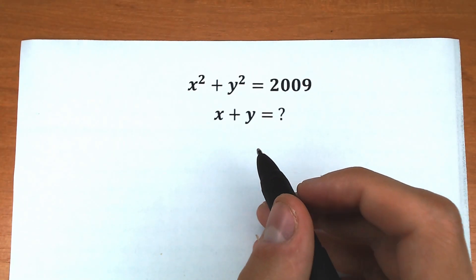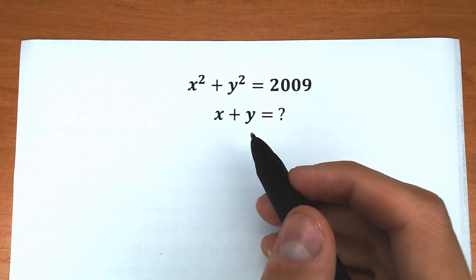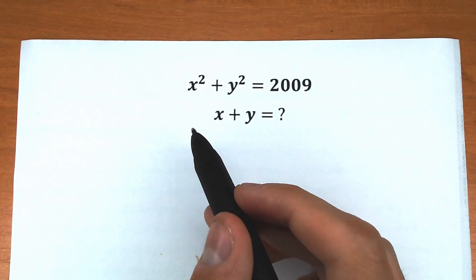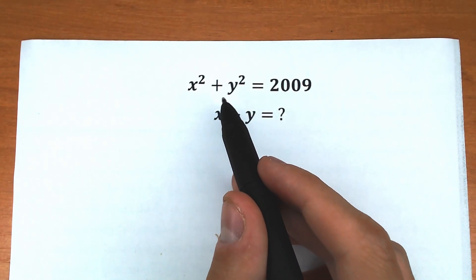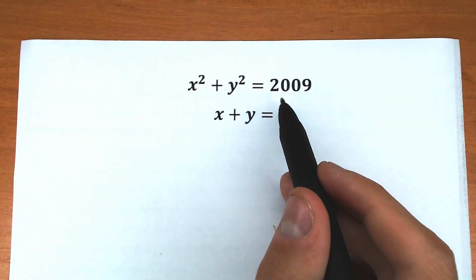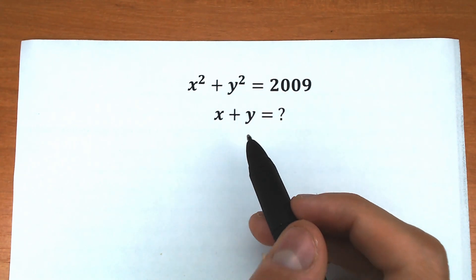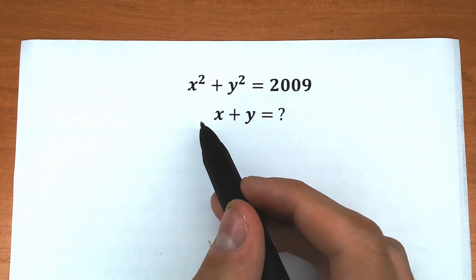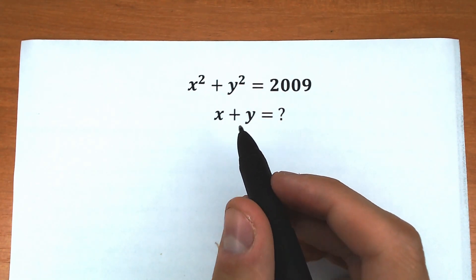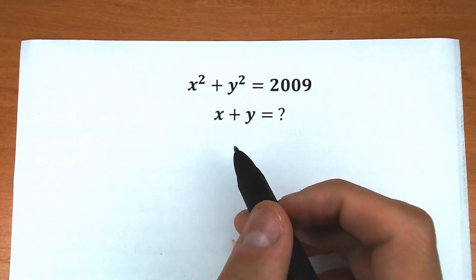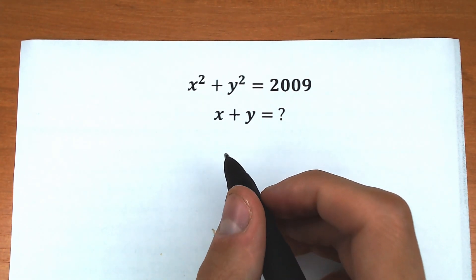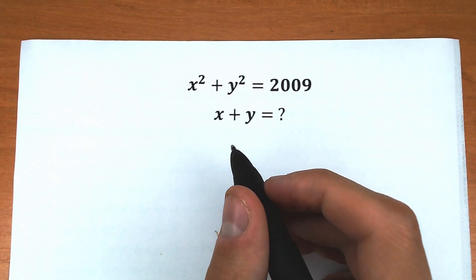Welcome to the channel! Today we have a really interesting challenge: x² + y² = 2009, and we should find x + y. What is the value of x + y? So how can we do this?